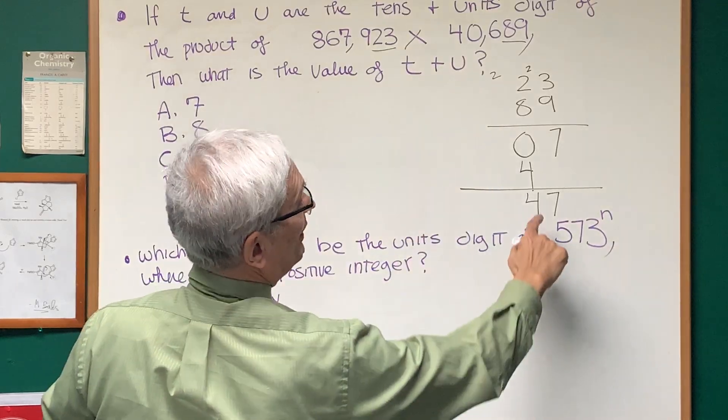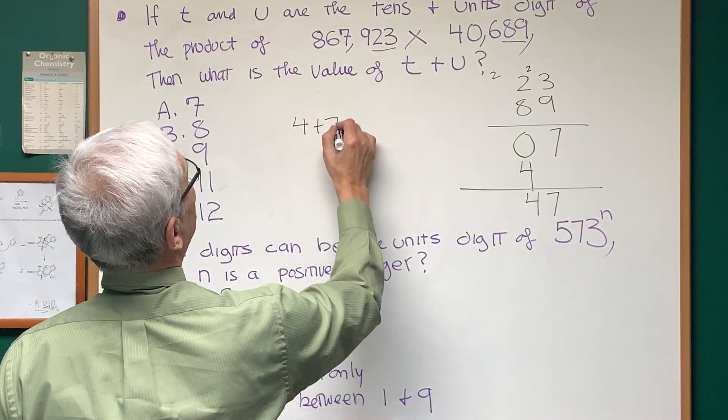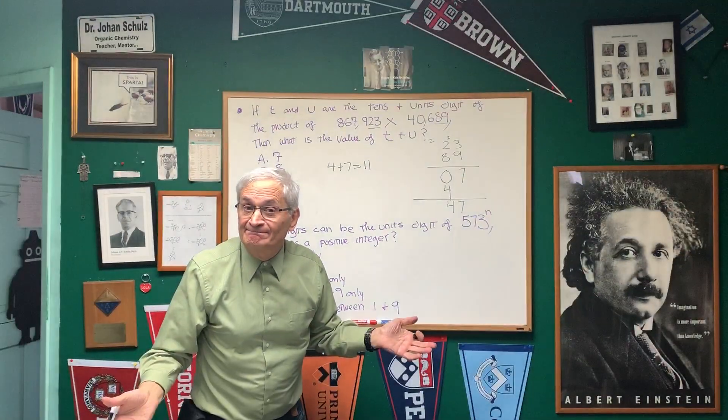Well, we don't need to worry about anything else. The tens and units place add up to forty-seven. So, what's T plus U? Well, this is T, T is four, U is seven, four plus seven equals eleven, and there we are. It's choice D.